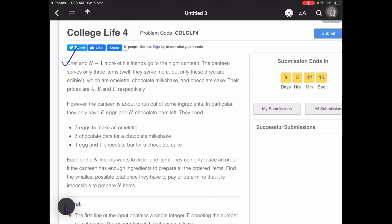Chef and n minus one more of his friends go to a night canteen, so there are n of them including Chef. The canteen serves only three items: omelet, chocolate milkshake, and chocolate cake.